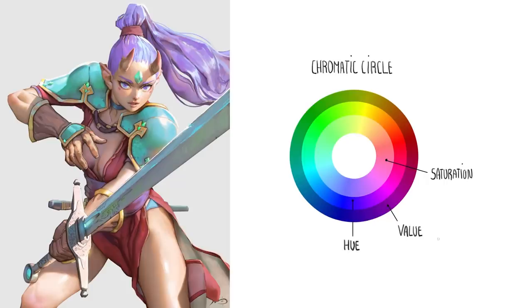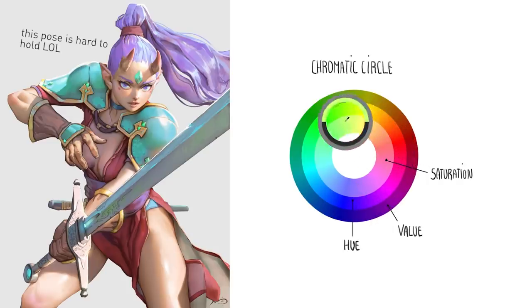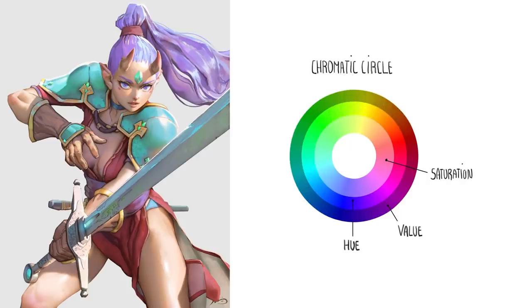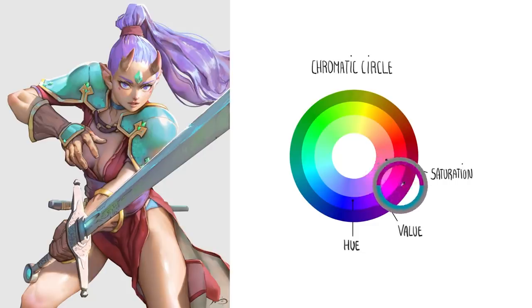Adding black doesn't impact the saturation, nor does it impact the hue. The color saturation, then, is how much white you add to the colors. Once again, it doesn't influence the other properties. You can change the saturation as much as you want — the hue and the values won't change. By playing around with those properties, we're able to recreate all of the visible colors. Hue, value, saturation.